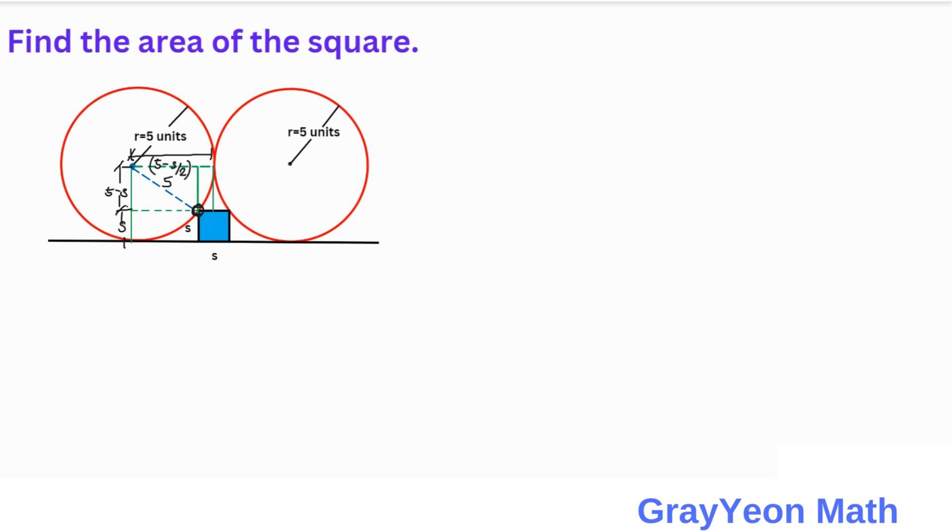So we have a right triangle. We have C squared equals A squared plus B squared. So we have 25, 5 squared, equals 5 minus S squared plus 5 minus S over 2 squared.